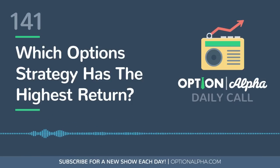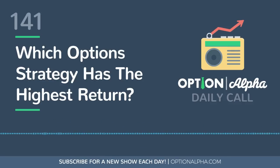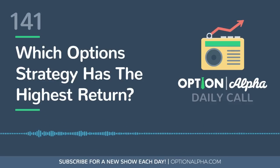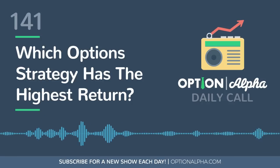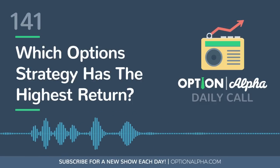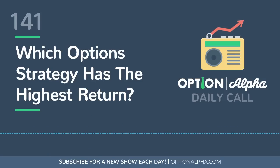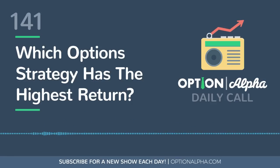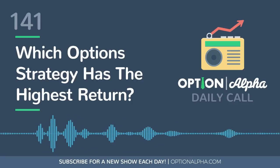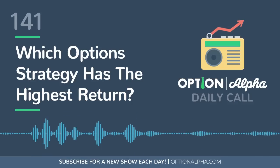When we get back to the topic of what are the highest returning strategies, there's obviously not one particular strategy that is the unicorn everyone's looking for. On a return basis — meaning the actual credit received versus the actual amount of risk or capital you have to put up — the highest ROI strategies are generally found in spreads: put credit spreads, call credit spreads, iron condors, and iron butterflies.